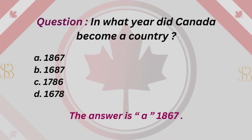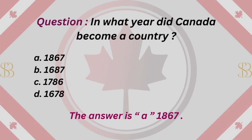Question: In what year did Canada become a country? A. 1867. B. 1687. C. 1786. D. 1678. The answer is A. 1867.